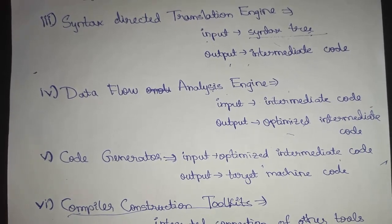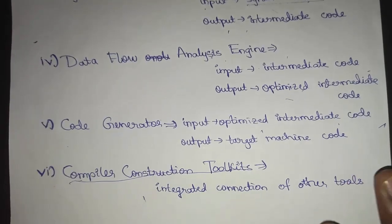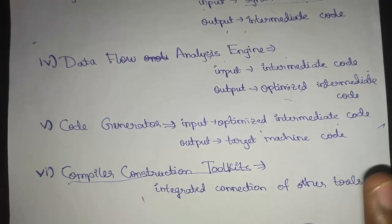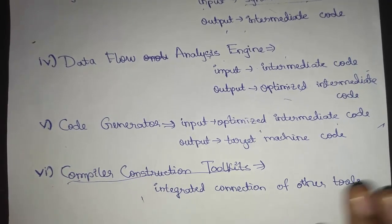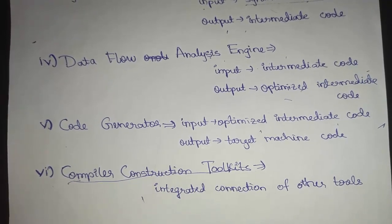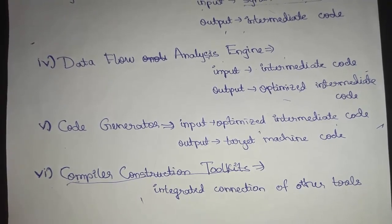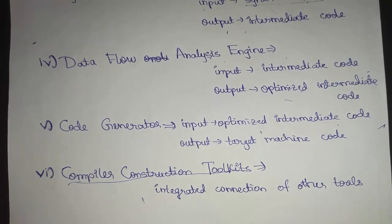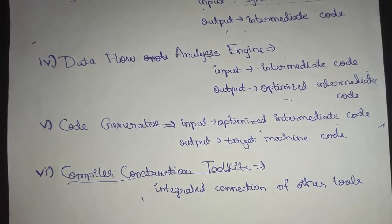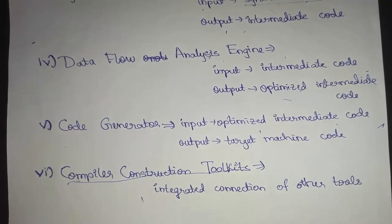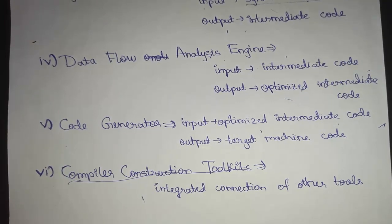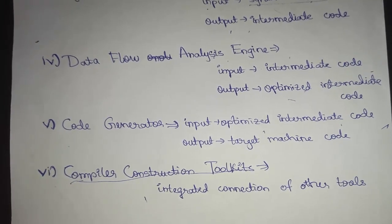Finally, the code generator phase produces the target code from the optimized intermediate code. The compiler construction toolkit integrates all tools: the scanner generator, parser generator, syntax directed translation engine, data flow analysis engine, and code generator. Thanks for watching — please take running notes for better understanding and share the video with your friends.